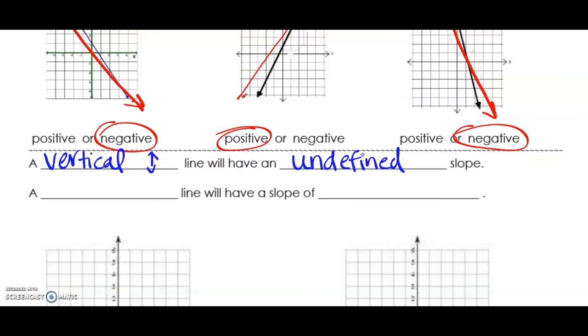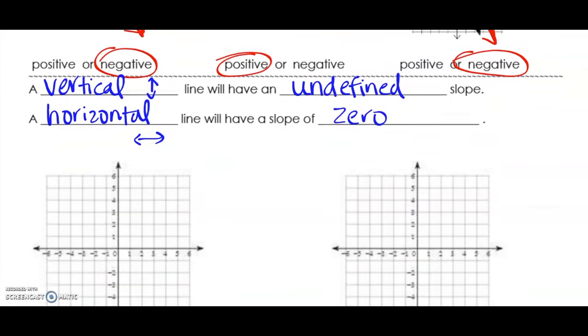A horizontal line is a line that goes left and right, like the horizon, and will have a slope of zero. We'll talk about how to calculate those later.